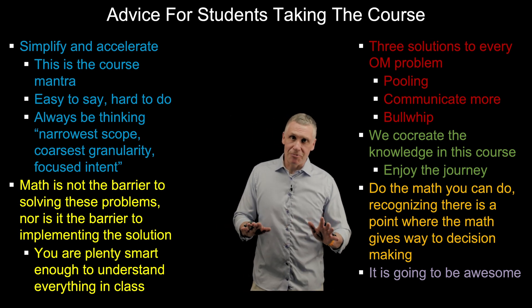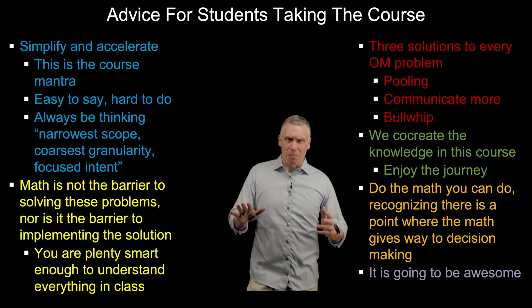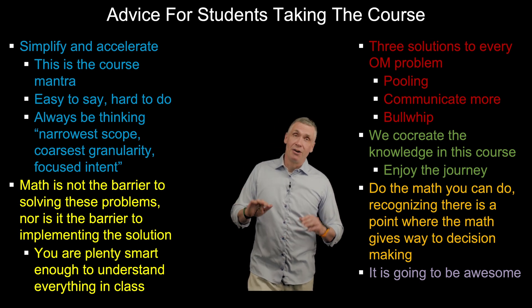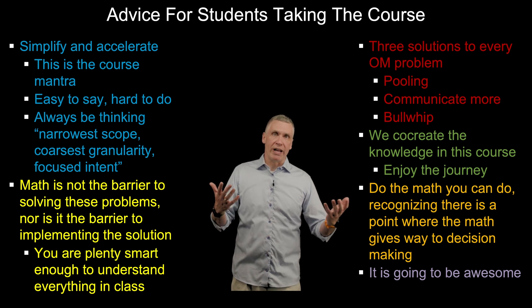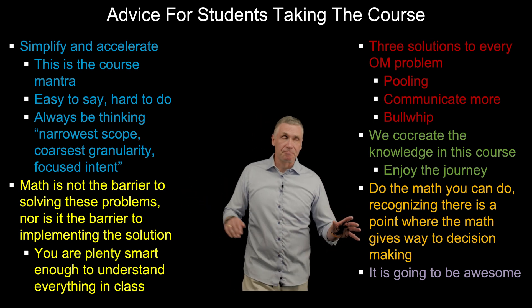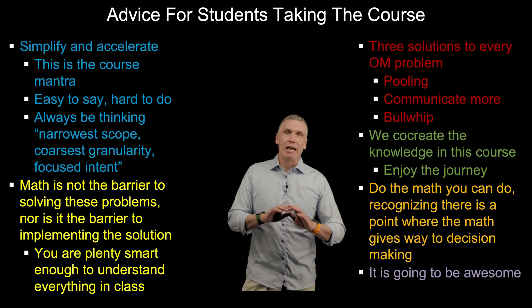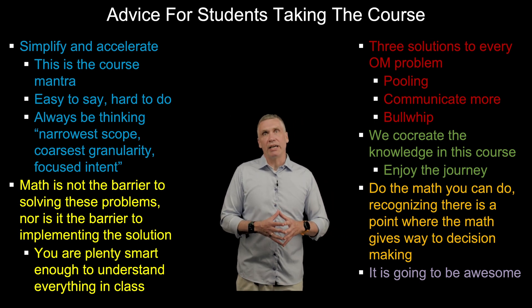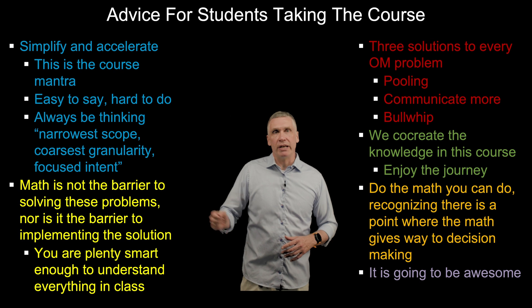If you ever come to class unprepared and get cold called, you should know the answer to every operations problem: pooling. Pooling is combining different random variables into one single stream — one pooled random variable that has less overall volatility. Pooling shows up everywhere in operations and in life. If someone else has already taken pooling, communicate more — also always a good solution in life and operations. This ties directly back to information in the capacity, inventory, and information substitutes framework.